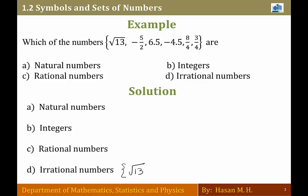Minus 5 over 2: 5 over 2 is a fraction, so it belongs to the rational numbers box. Minus 5 over 2 does not belong to the integers box and it does not belong to the natural numbers box.